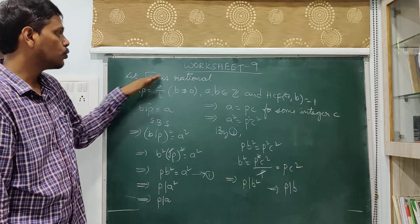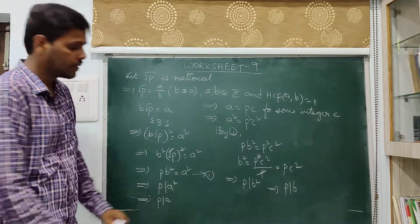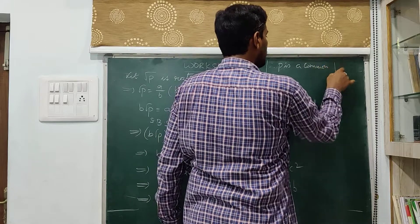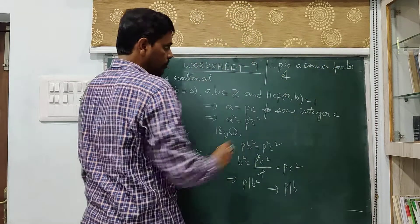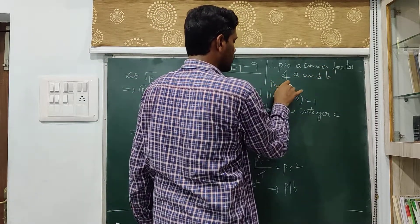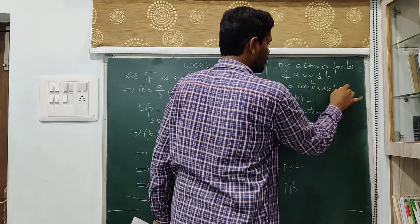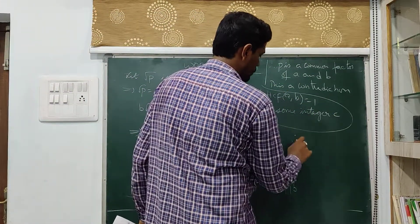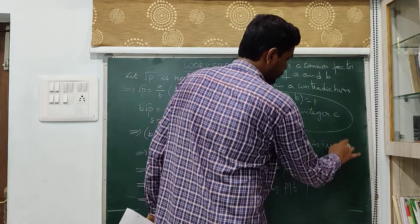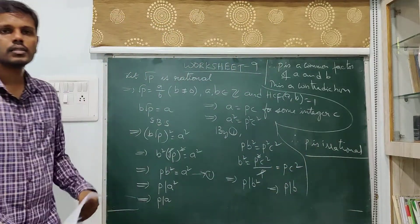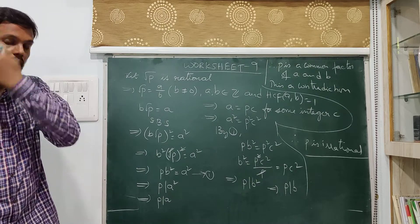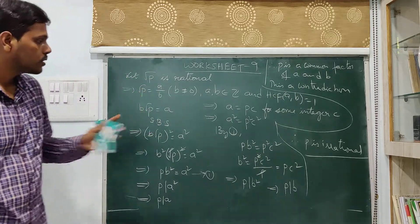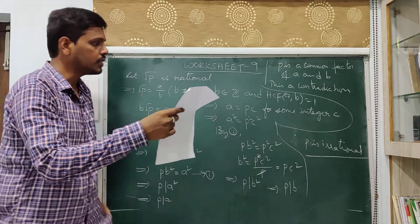That contradiction arose because we assumed root p is rational. Therefore p is a common factor of a and b — this is a contradiction — and therefore root p is irrational. So instead of using specific numbers, we have proved it for any prime number p. This proof holds for p as any prime number.